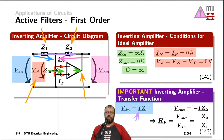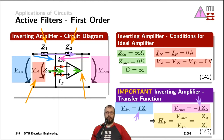Applying Ohm's law across Z2 and taking the current flow into account, where the current is the exact same current used for defining the input voltage — dividing the output voltage by the input voltage gives us the transfer function of the inverting amplifier: minus Z2 divided by Z1.